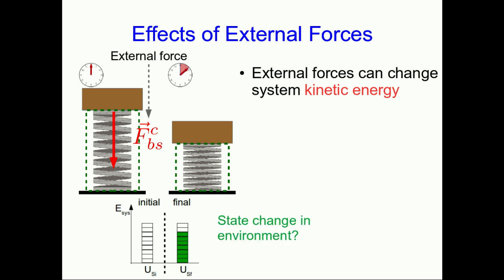Once again there doesn't appear to be any corresponding reduction in internal energy of the system, so it looks like this is not a closed system and we should identify a state change in the environment. In this case it's that the brick moved down, so since the brick and the earth are both in the environment, the environment has lost gravitational potential energy. It's the gravitational potential energy in the environment that has become spring energy in our system.